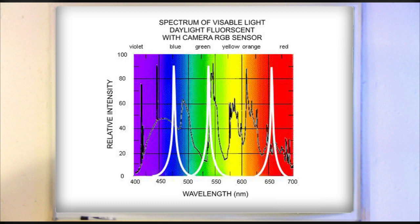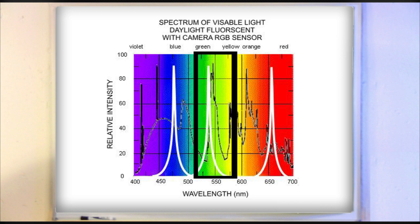Notice the large energy produced in the green part of the spectrum. This is typically normalized by setting the white balance of the camera.